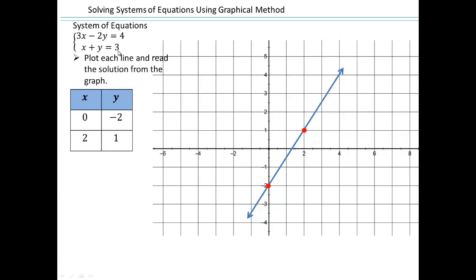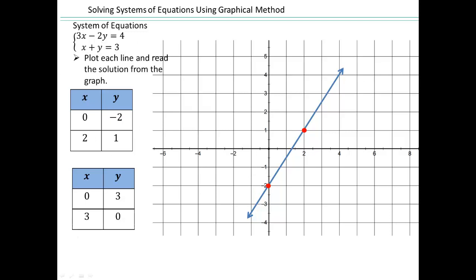Go ahead and plot x plus y equals 3 on your own — make a chart and plot the line. When x is 0, y is 3, and when y is 0, x is 3. So those are your x and y intercepts for that line: (0, 3) and (3, 0). Now, we were looking for a point in the plane that satisfies both equations. You can see how (2, 1) satisfies both: 2 plus 1 is 3, and 3 times 2 minus 2 times 1 equals 6 minus 2 equals 4. So (2, 1) belongs to both lines, and that is your solution.